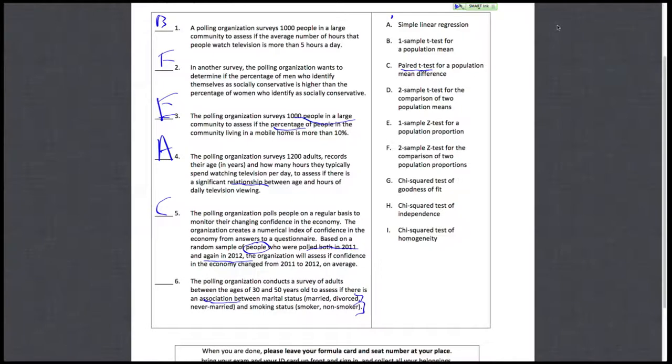There's two group variables, married/divorced and smoker/non-smoker, and we want to know if the two groups are associated, not whether they're the same, which would be homogeneity. It's not a goodness of fit because we don't have a null model to evaluate, so it's going to be H.